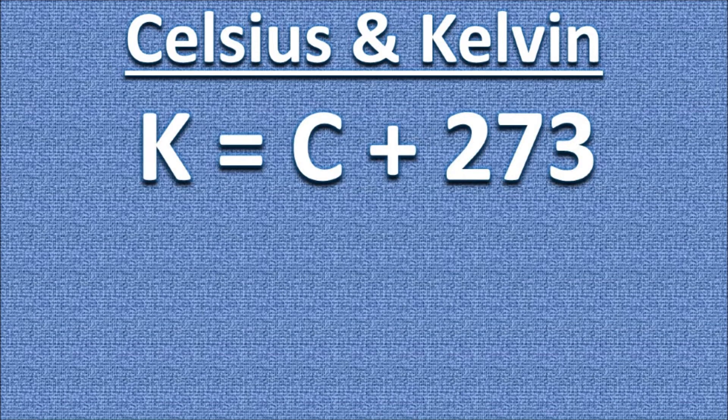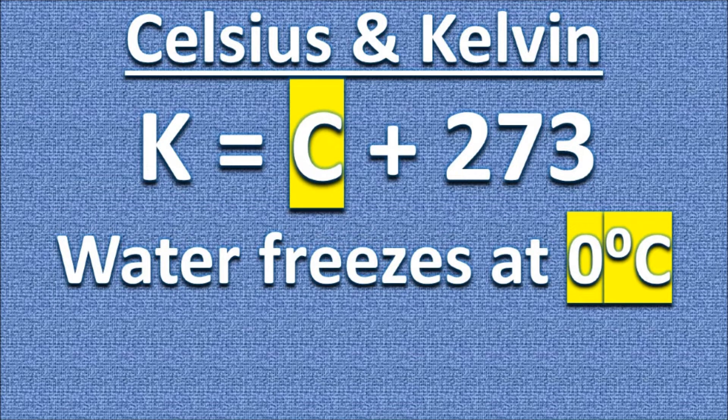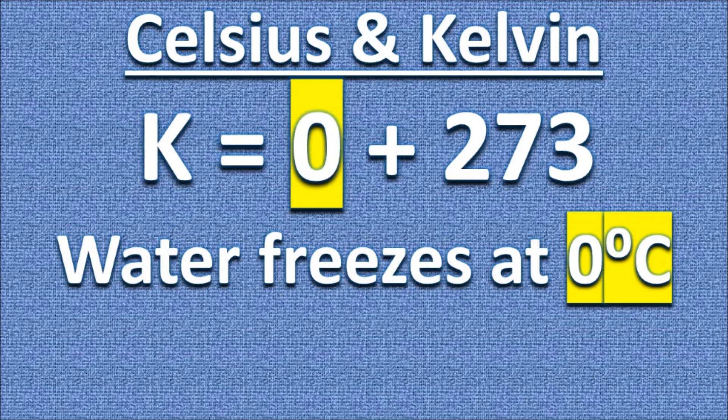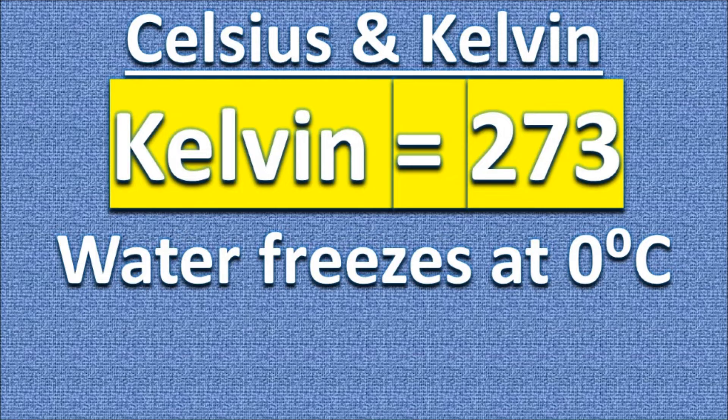Let's begin by plugging a value into our formula. Here we see that water freezes at zero degrees Celsius. So we're going to plug zero in for C. Now this is very simple and straightforward. Zero plus 273. So Kelvin at zero degrees Celsius is 273.